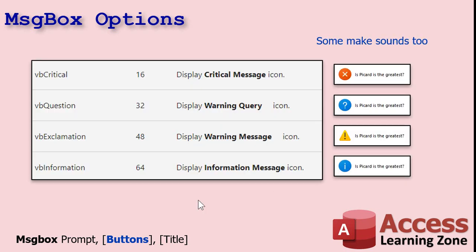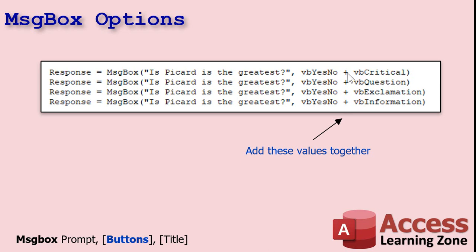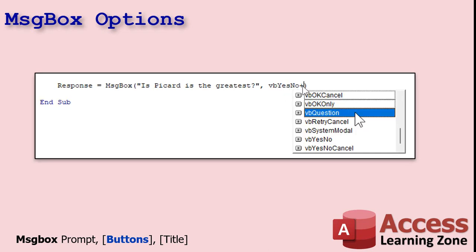In addition to a plain message box, you can also get icons and sounds — some of them make different sounds. There's critical, question, exclamation, and information. Personally, I pretty much only use question and critical, because critical makes the big bell noise. You specify them by adding values together: first you pick what buttons you want — say yes and no — and then you add the style you want: add critical, add question, add exclamation, and so on. Access will add those together internally. After you pick your button style, hit the plus sign and IntelliSense will come back so you can add those values.